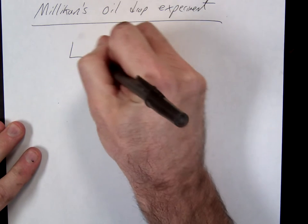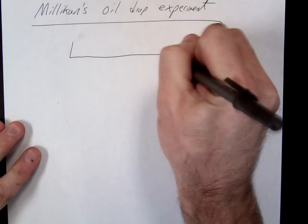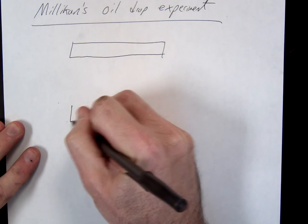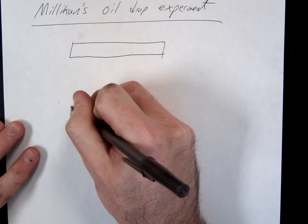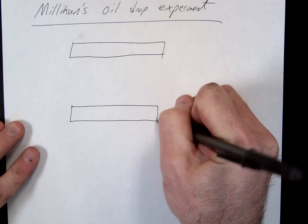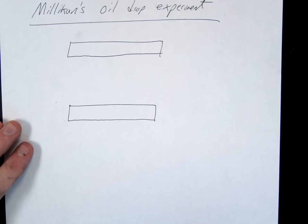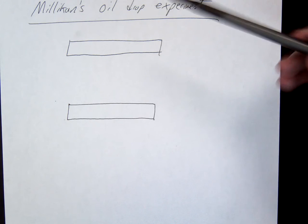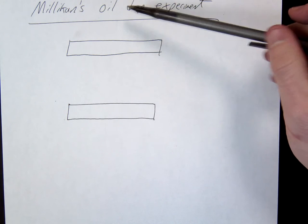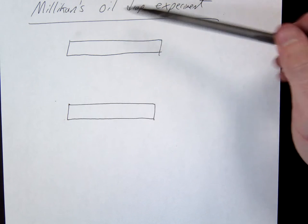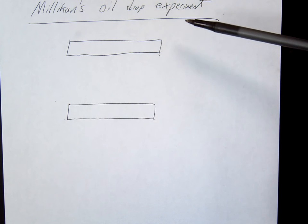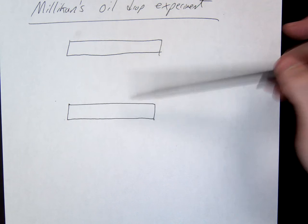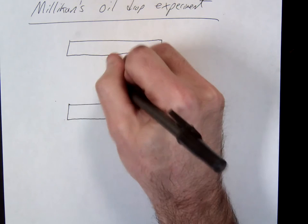So here's what Milliken did. He took a couple plates. The name doesn't sound American — well, as you know, most Americans, the only true Americans are Native Americans, right? All the other ones came from somewhere else. So Milliken's oil drop experiment basically took two parallel plates, and he took an oil drop.